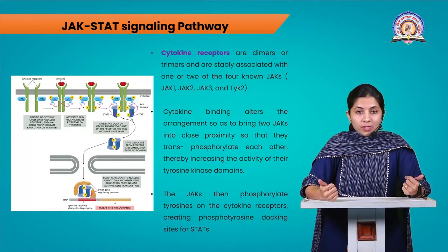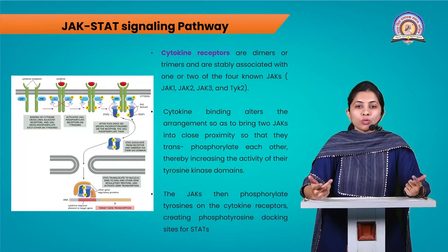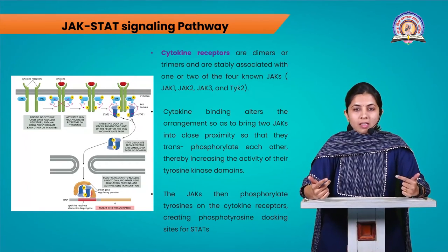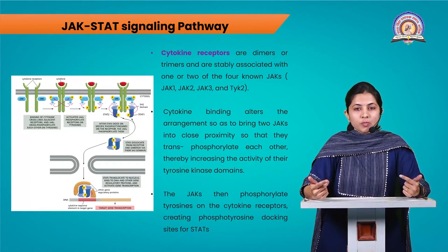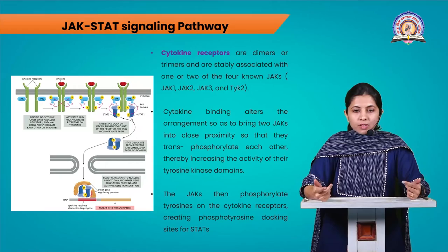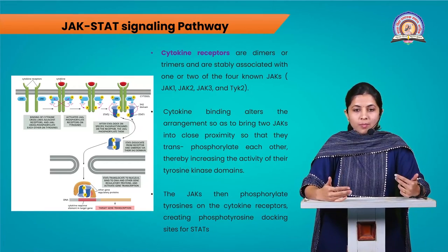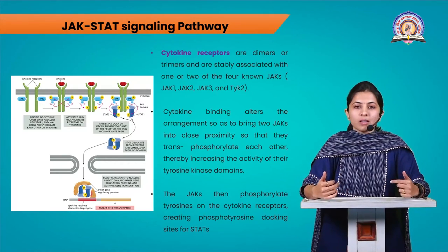Cytokine receptors are dimers or trimers and are stably associated with one, two, or four known JAKs. The four well-known and characterized JAK types are JAK1, JAK2, JAK3, and TYK2. Binding of a cytokine alters the receptor arrangement, bringing JAKs into close proximity, leading to transphosphorylation. These activated JAKs then phosphorylate tyrosines on the cytokine receptor, creating docking sites for STAT proteins as described in the signaling pathway mechanism.